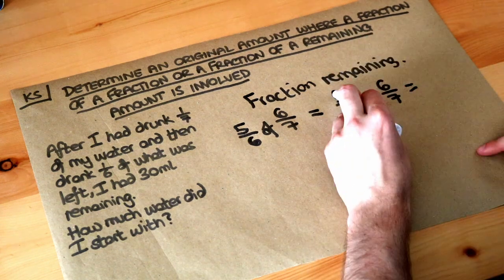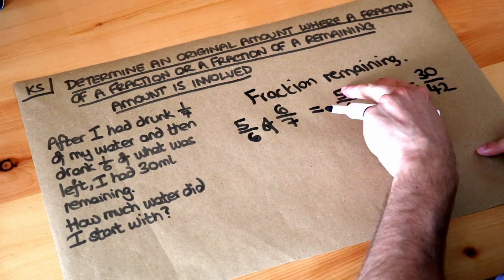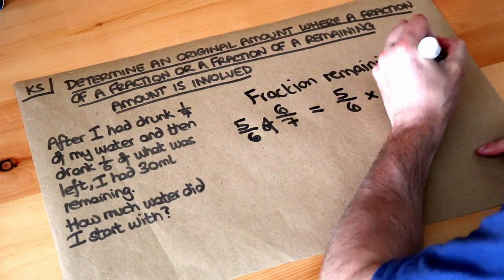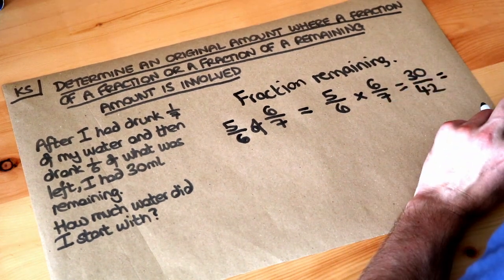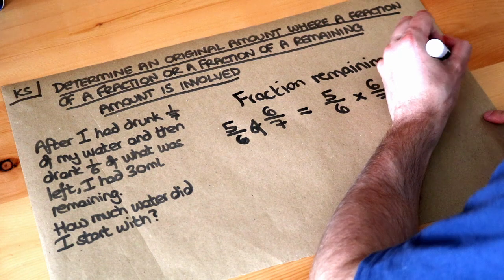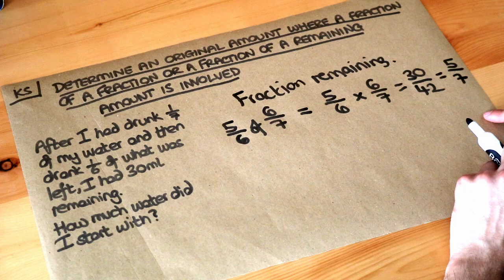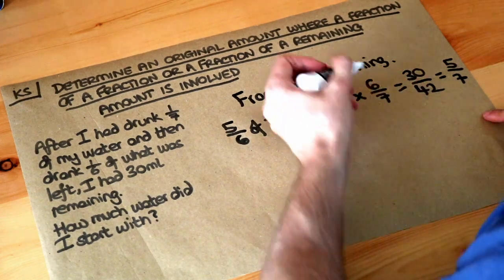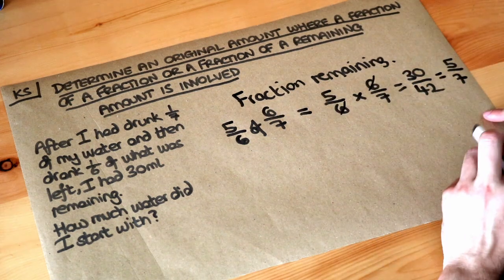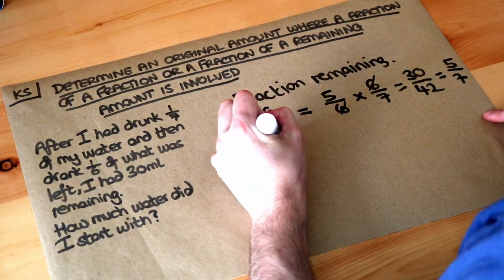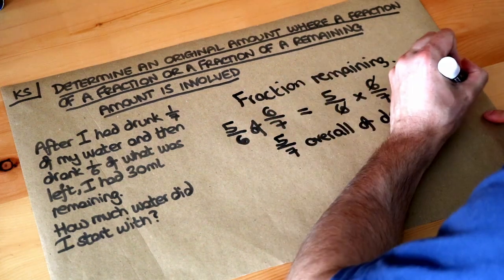We just need to multiply these fractions together to find the overall fraction of the drink left. Five times six is thirty, six times seven is forty-two, giving thirty over forty-two. We can simplify by dividing both by six, giving five over seven. Alternatively, we could cross-cancel the sixes to get five-sevenths directly. So we have five-sevenths of the drink remaining.